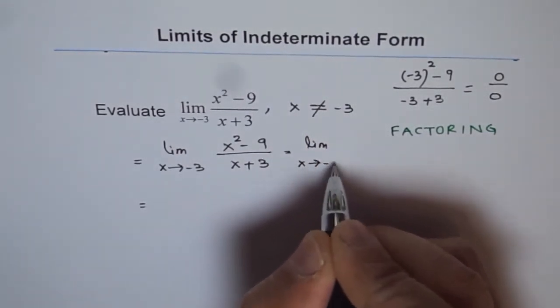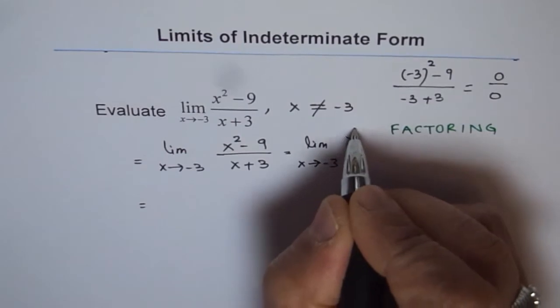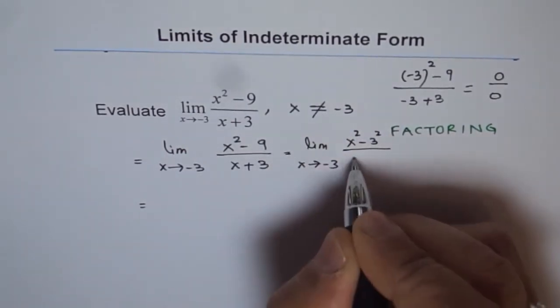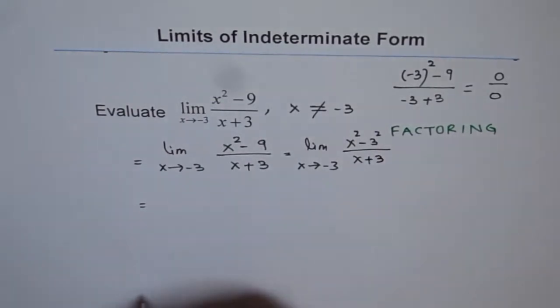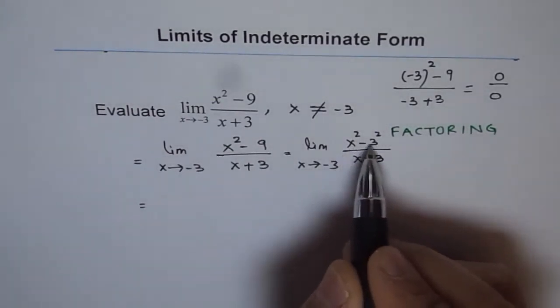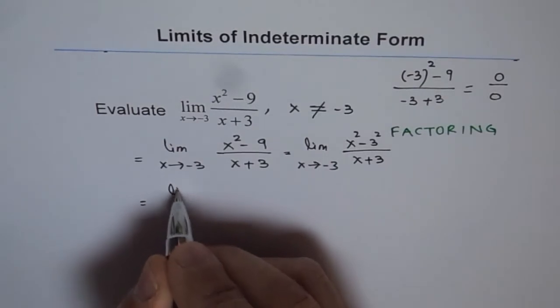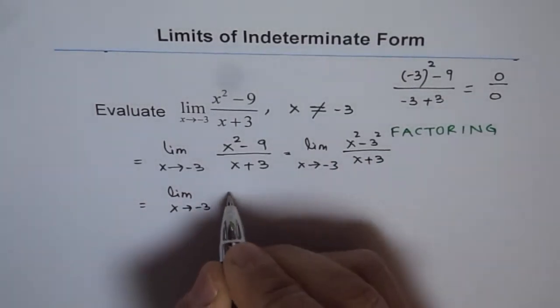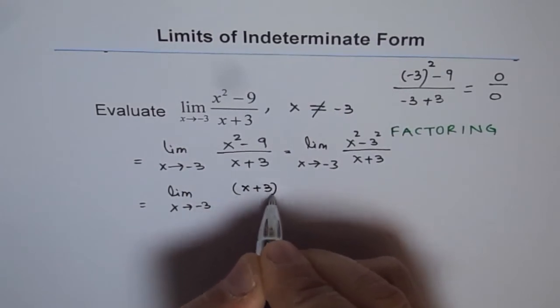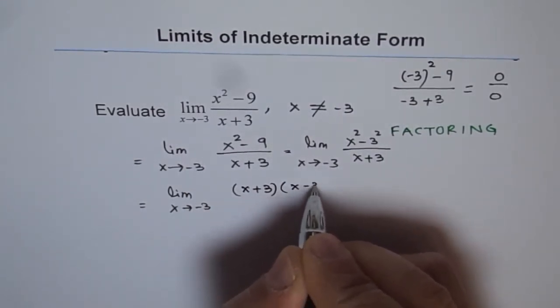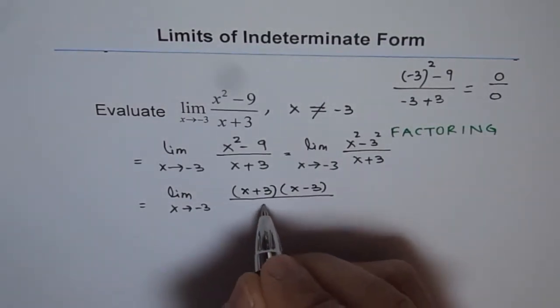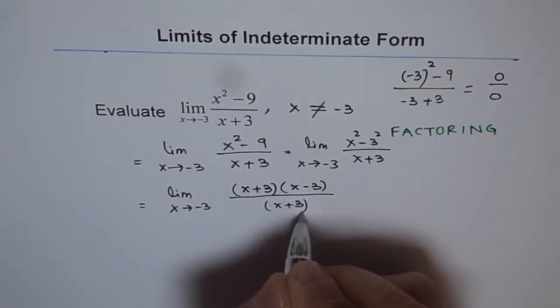9 is 3 squared and in the denominator we have x plus 3. So we can factor the difference of squares by writing x plus 3 times x minus 3. So the numerator can be factored as x plus 3 times x minus 3, and we have x plus 3 in the denominator.